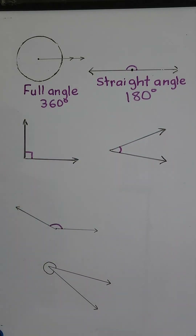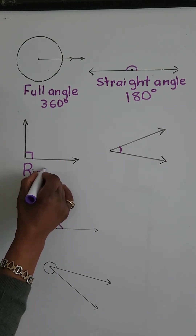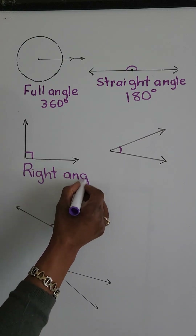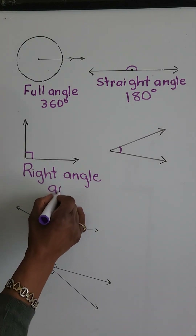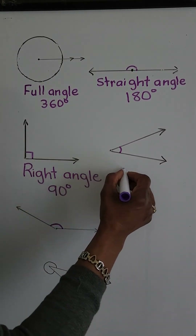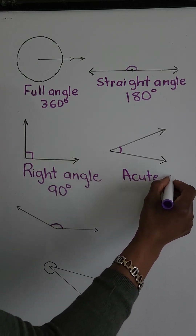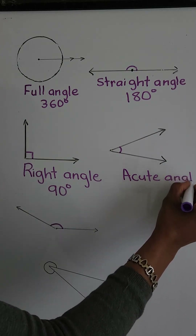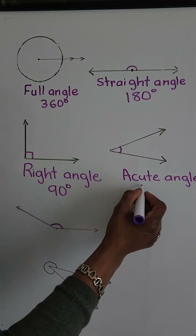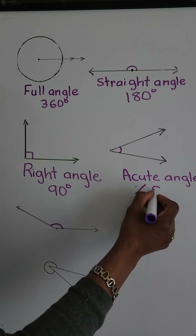Next we have a right angle, and a right angle measures 90 degrees. Next we have an acute angle, and an acute angle measures less than 90 degrees.